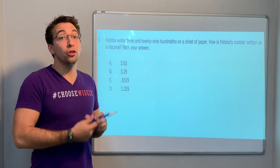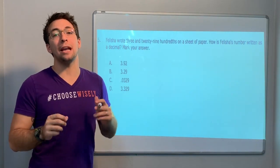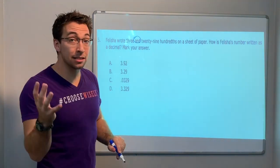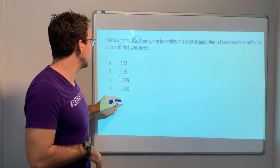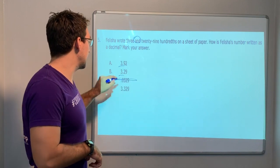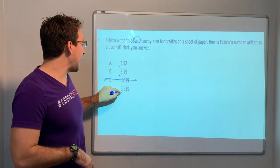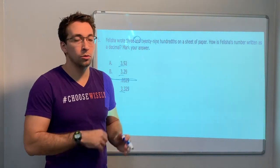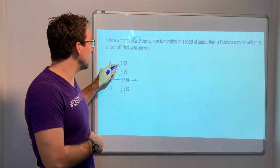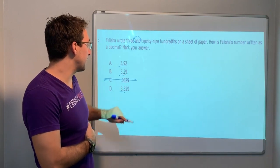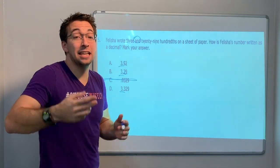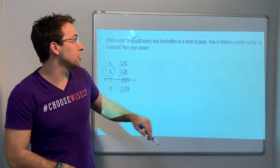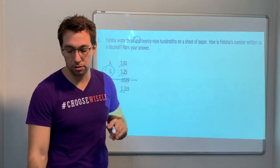Felicia wrote three and 29 hundredths on a sheet of paper. We know what 'and' is, right? That's our decimal. So three and, three decimal. C is not our answer. Three and 29 hundredths. So we just have to write the number 29, and there's only two place values because it's in the hundredths. So B is our answer. How is Felicia's number written as a decimal? Mark your answer.